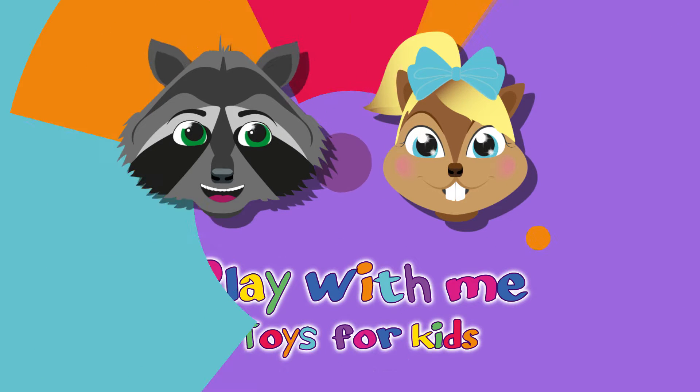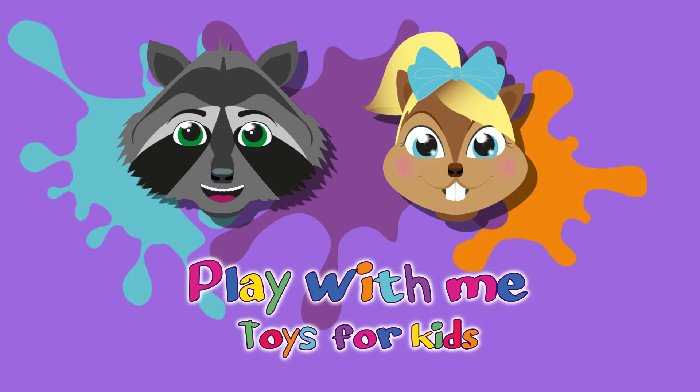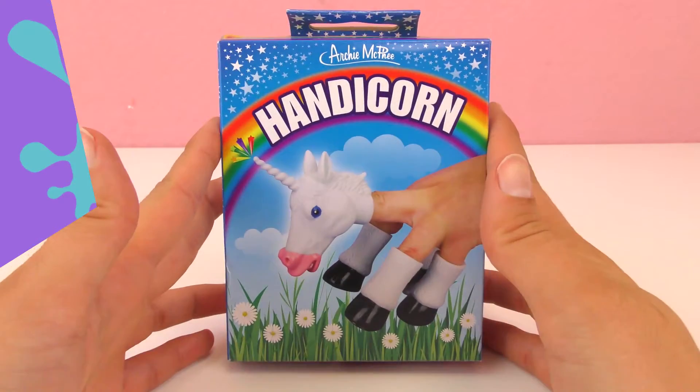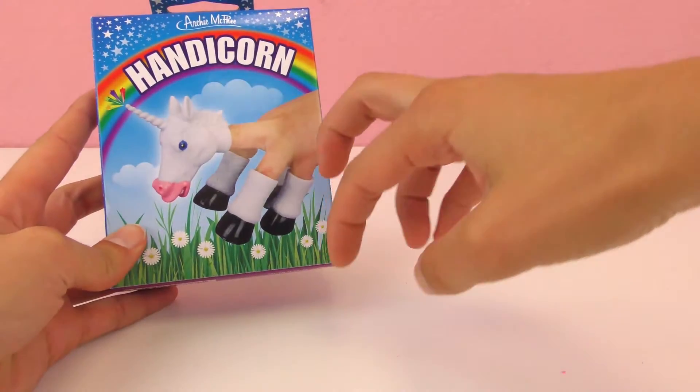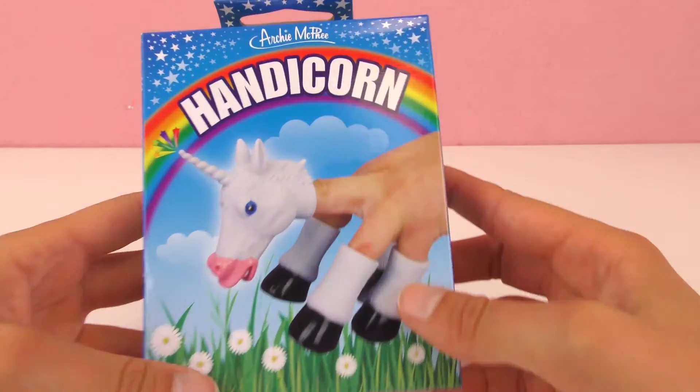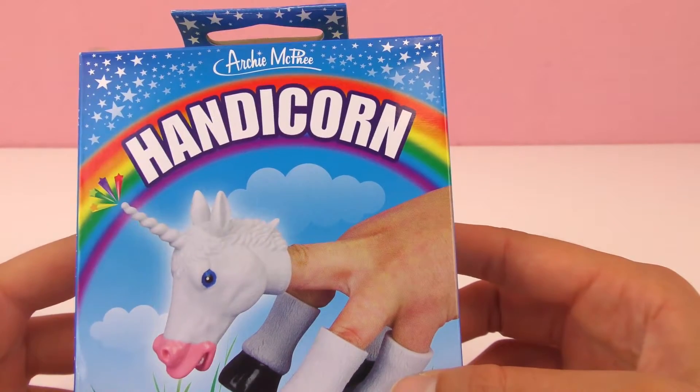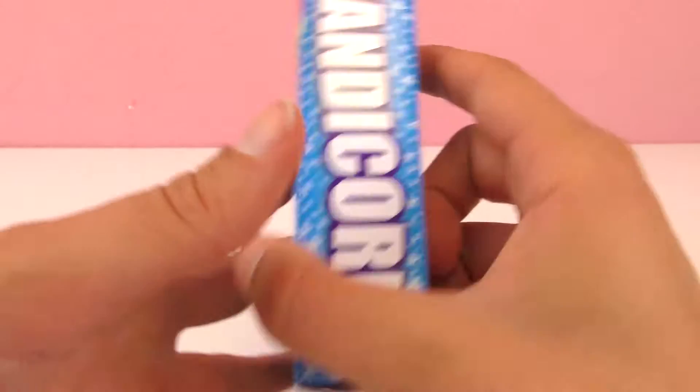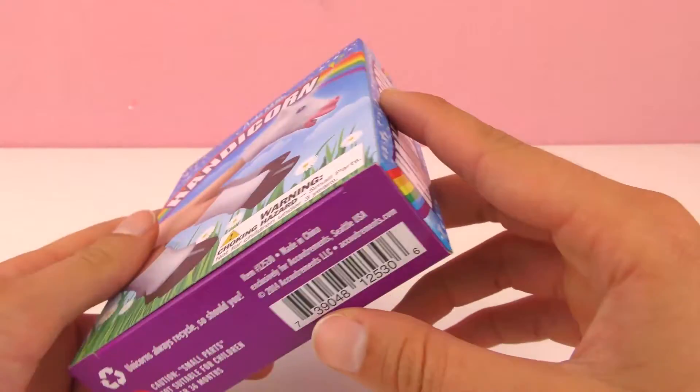Hello everyone and welcome to Play With Me Toys For Kids. Today I have a cool product called Handicorn. And yep, this is a unicorn that goes in your hand. So a hand unicorn. Super fun. It's from Archie McPhee. And this is meant for kids 4 years and older.